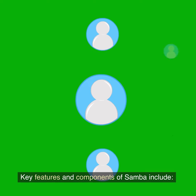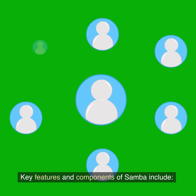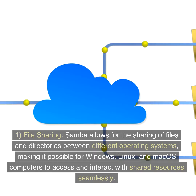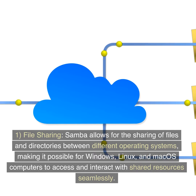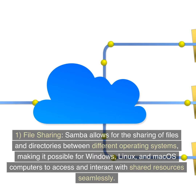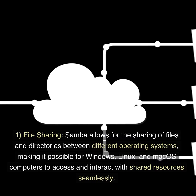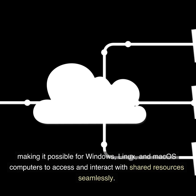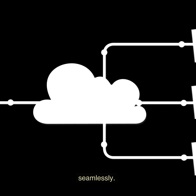Key features and components of Samba include: 1. File sharing. Samba allows for the sharing of files and directories between different operating systems, making it possible for Windows, Linux, and macOS computers to access and interact with shared resources seamlessly.